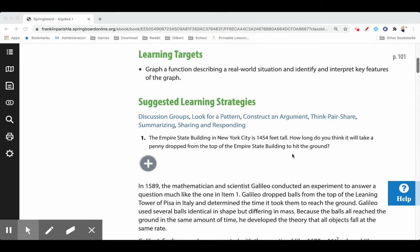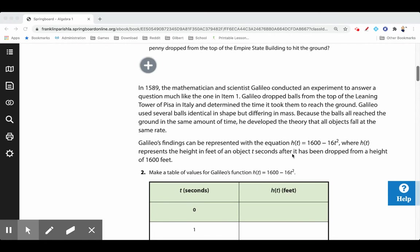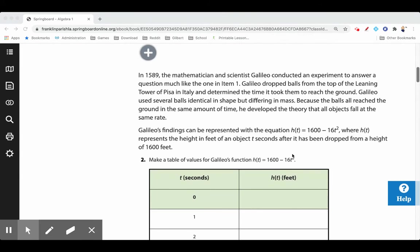Well, in 1589, the mathematician and scientist Galileo conducted an experiment to answer a question much like the one in item one. Remember, math and science pretty much go together. In the higher levels of those classes, you'll always be doing a little bit of math and science, and most of the examples in math will be science-related, so they just kind of blend together. Galileo dropped balls from the top of the Leaning Tower of Pisa in Italy and determined the time it took them to reach the ground. Galileo used several balls identical in shape but differing in mass—think like baseball versus tennis ball versus bowling ball, same shape but different masses. Because the balls all reached the ground in the same amount of time, he developed the theory that all objects fall at the same rate.